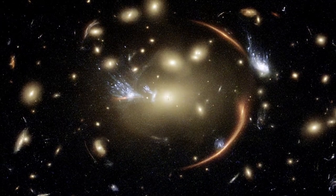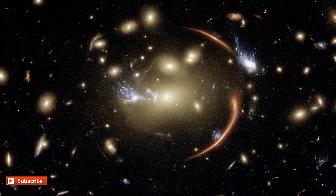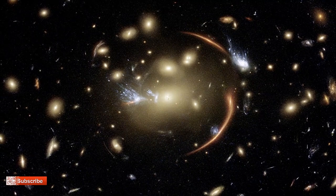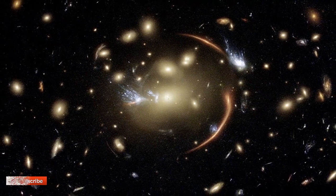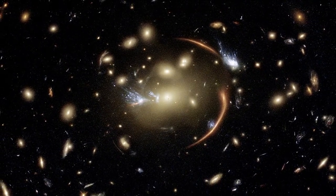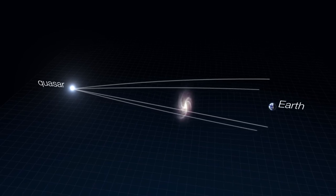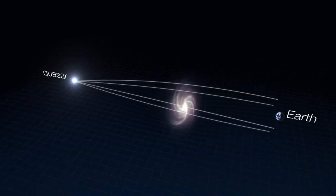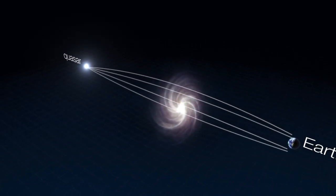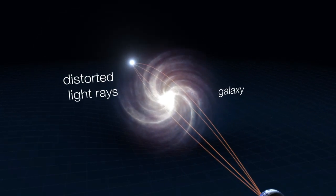Galaxy clusters like MAX-J0138.02155 are interesting objects of study because they provide valuable insights into the large-scale structure of the universe, as well as the distribution of dark matter. Gravitational lensing, which occurs due to the bending of light by the gravitational field of massive objects like galaxy clusters, allows astronomers to study and map the distribution of dark matter in these clusters.